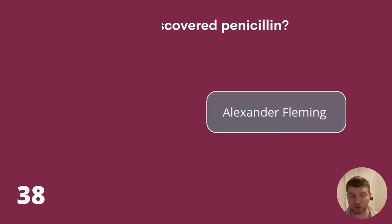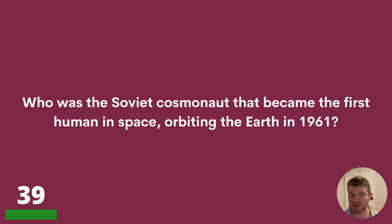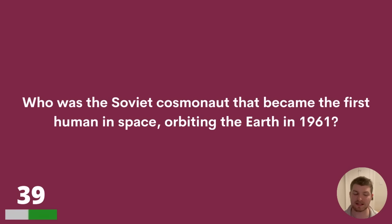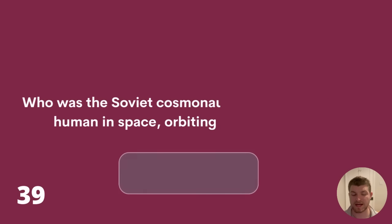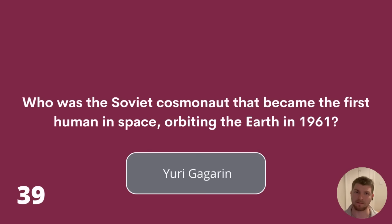Question 39. Who was the Soviet cosmonaut that became the first human in space, orbiting the Earth in 1961? The answer is Yuri Gagarin.